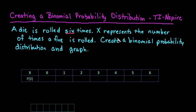For this video, I'm going to create a binomial probability distribution using the TI-Inspire. A die is rolled six times, X represents the number of times a 5 is rolled, and we want to create a binomial probability distribution and graph.